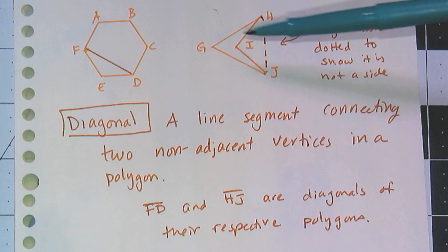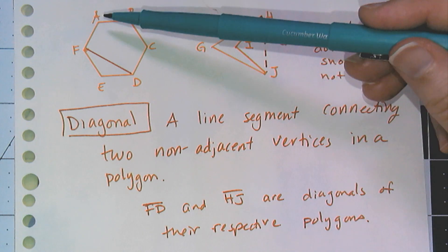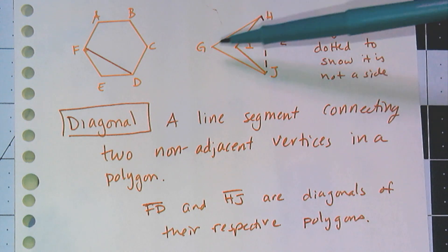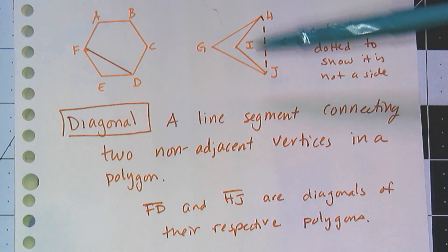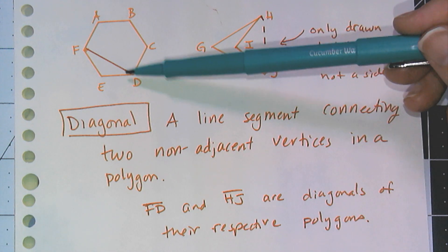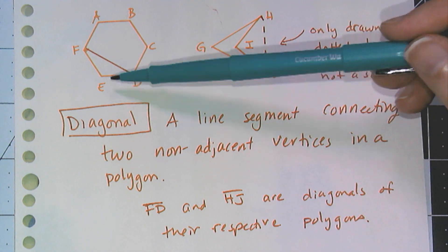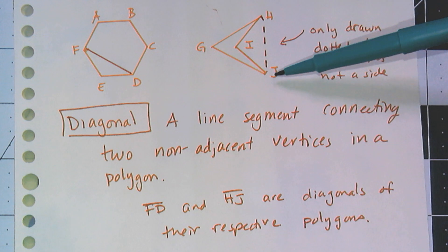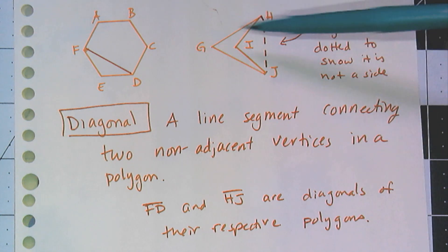I have two different types of polygons: one is polygon ABCDEF, and the other is polygon GHIJ. You'll notice that FD is a diagonal because F and D are not adjacent. And HJ is a diagonal because H and J are not adjacent. So why did I choose these two?